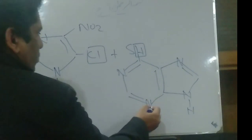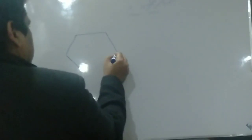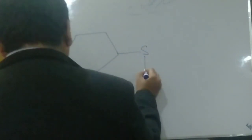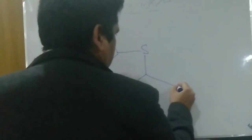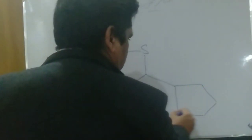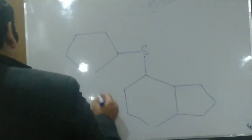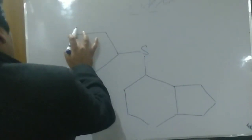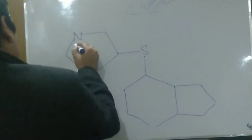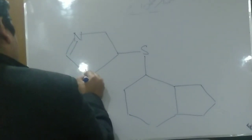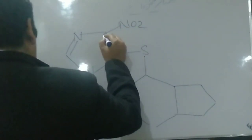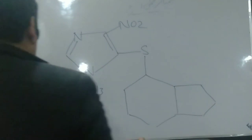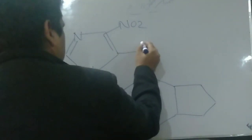When both components combine, a new structure is formed containing nitrogen, a double bond, nitrogen, and a CH₃ group, along with a thioether linkage — resulting in the final drug azathioprine.